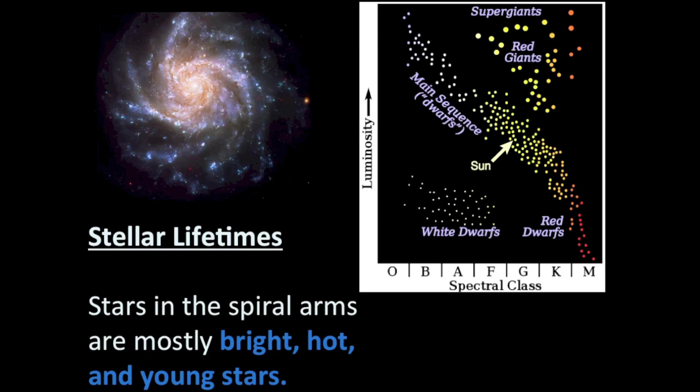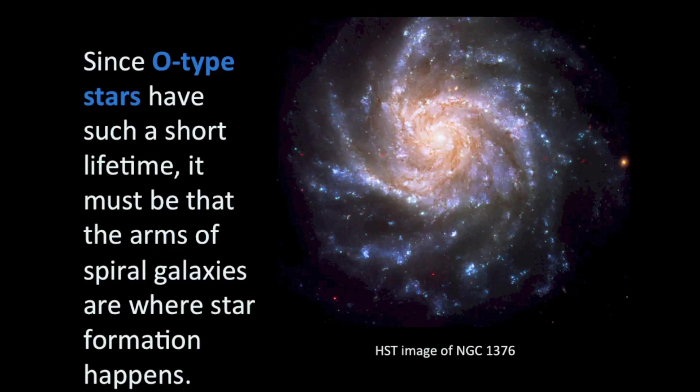What we can conclude is that stars in the spiral arms of galaxies are mostly hot, bright, and young stars. There are stars between the spiral arms, but they're not primarily O and B type stars. Since O type stars have such short lifetimes, the spiral arms is where stars form — because O and B type stars, since they don't live very long, if they're in the spiral arms, they haven't been there for very long and haven't had enough time since forming to drift out of the spiral arms.